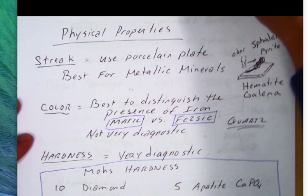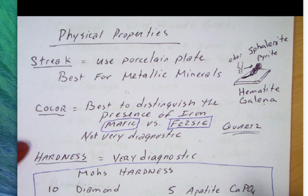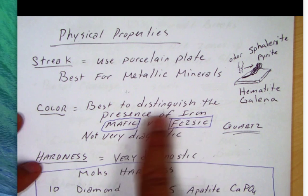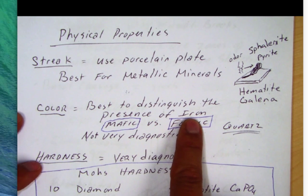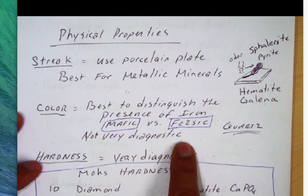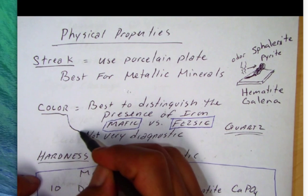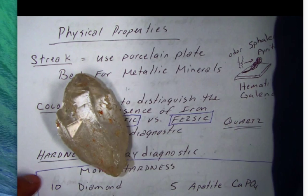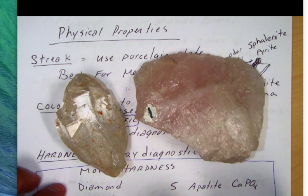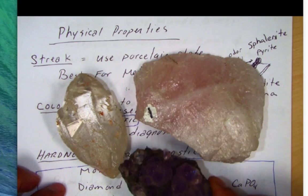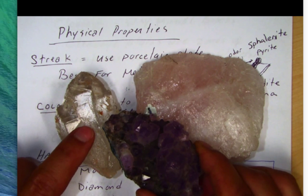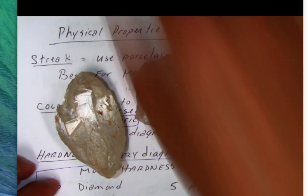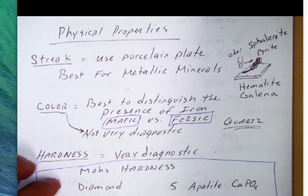Then we have color. Color is best used to distinguish between mafic minerals and felsic minerals. If a mineral is mafic — containing magnesium and iron — you're going to see that iron come out as a dark color. However, color is not very diagnostic by itself. For example, quartz could be clear, or it could be this nice rose quartz right here, or there's milky quartz, or the amethyst. So there are three varieties of quartz all in different colors. Color may or may not help you, but it can certainly help with mafic versus felsic.